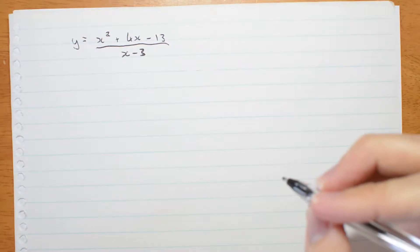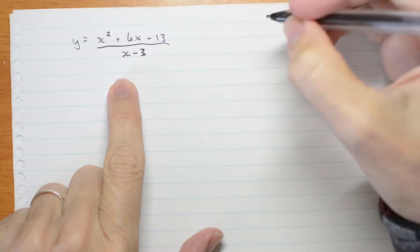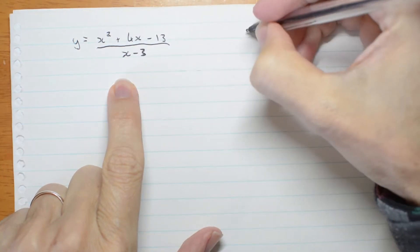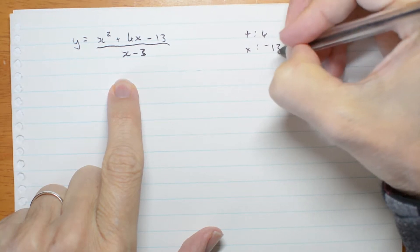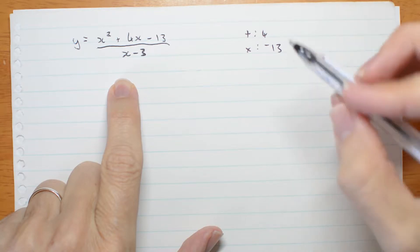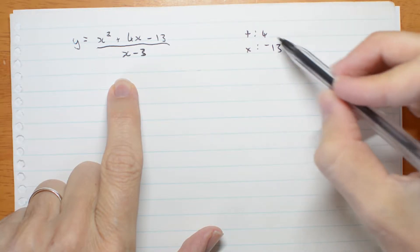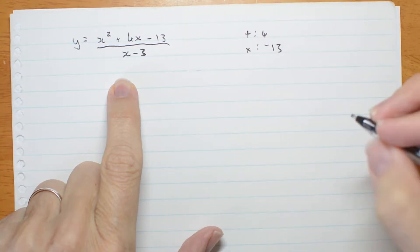Let's try sketching this graph. First, can we simplify this at all? To factorize the top I need two numbers that add to 4 and multiply to negative 13. Well I'm not going to work that out easily and quickly because 13 is prime. So let me see if I can complete the square to simplify that.